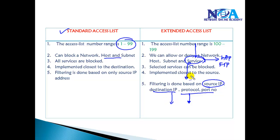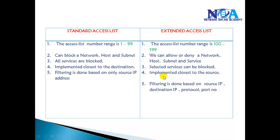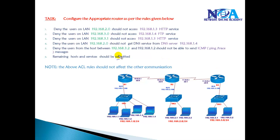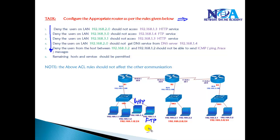We can also allow or deny a specific service between any two different hosts or any-to-any communications. In our sample scenario, we have a topology of three routers. We'll assume that 1.3 is the HTTP server, 1.4 is the FTP server, and 1.4 also acts as a DNS server. We're going to deny some specific services based on defined rules.